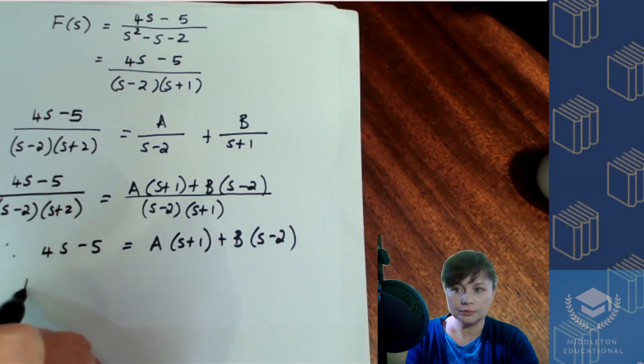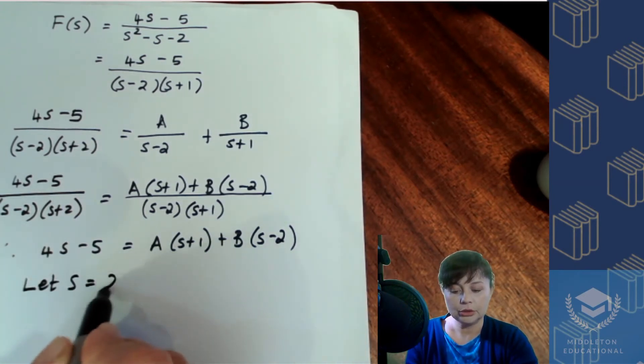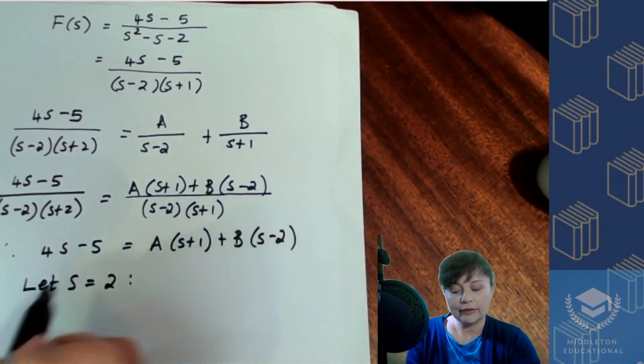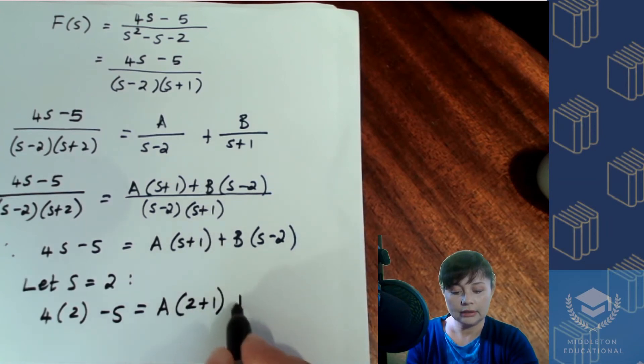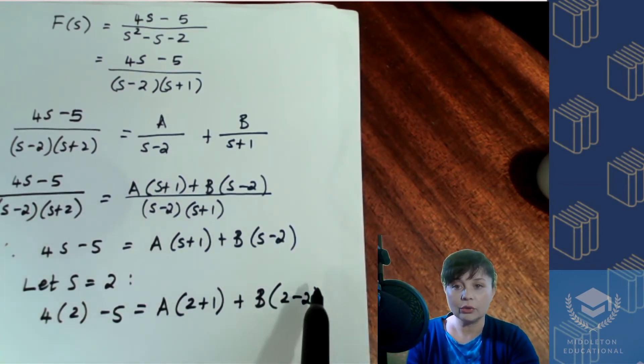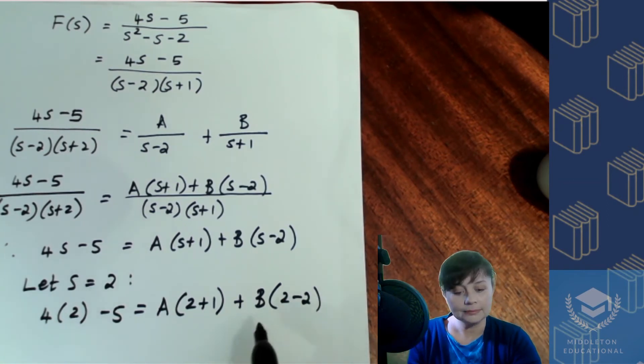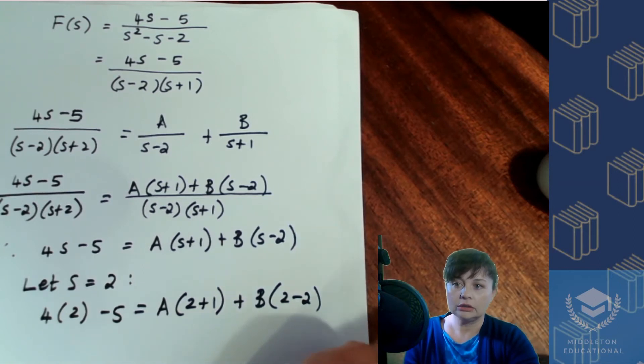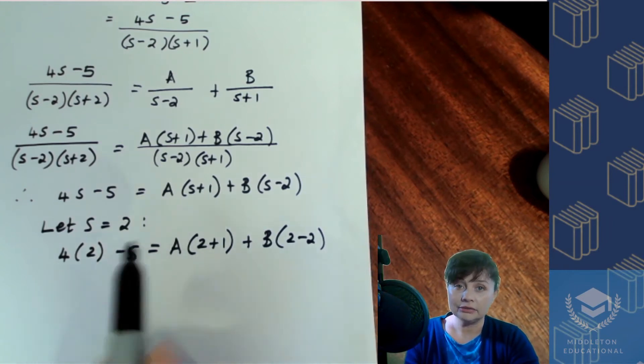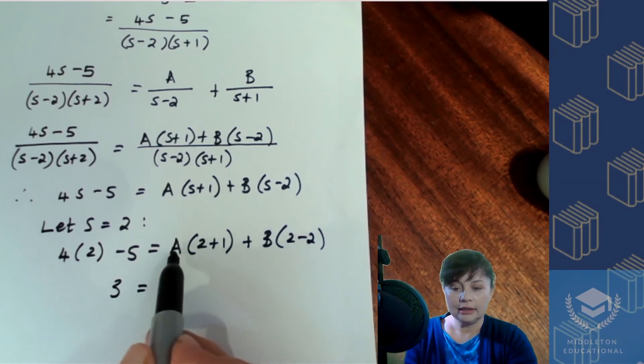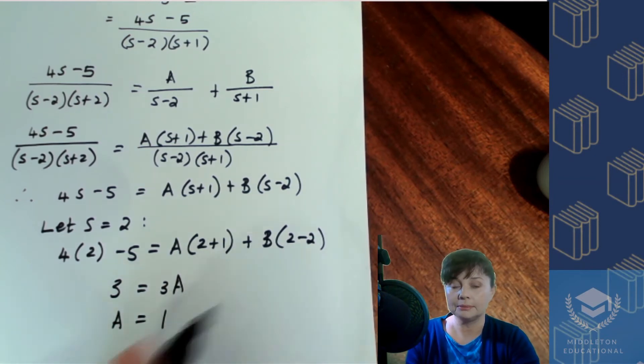So I'm going to choose s to be 2. Let's start with that. So if I substitute that in, I'm going to get 4 times 2 minus 5, a is going to be 2 plus 1, b times 2 minus 2. So that term here is going to fall away because 2 minus 2 is 0. So that means you have no b. So then we've got 4 times 2 is 8 minus 5 is going to be 3. And this is going to be a times 2 plus 1, so it's going to be 3a, which means that a is going to be 1.